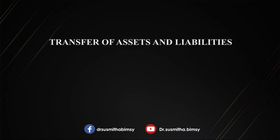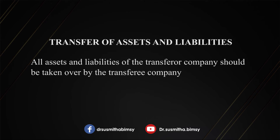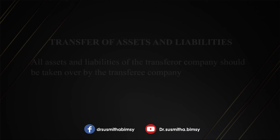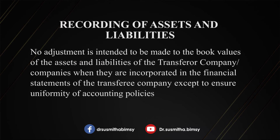The first condition is the transfer of assets and liabilities. For amalgamation in the nature of merger, all assets and liabilities of the transferor company should be taken over by the transferee company — that is, whatever assets appear in the balance sheet of the transferor company must be taken over by the transferee company. If this condition is violated, you must immediately recognize it as amalgamation in the nature of purchase.